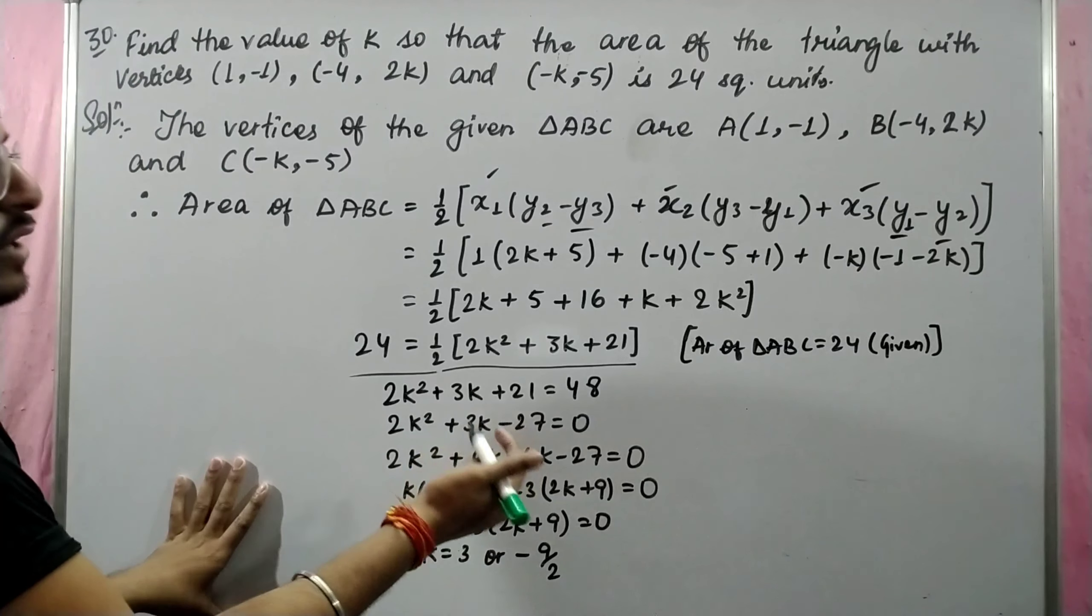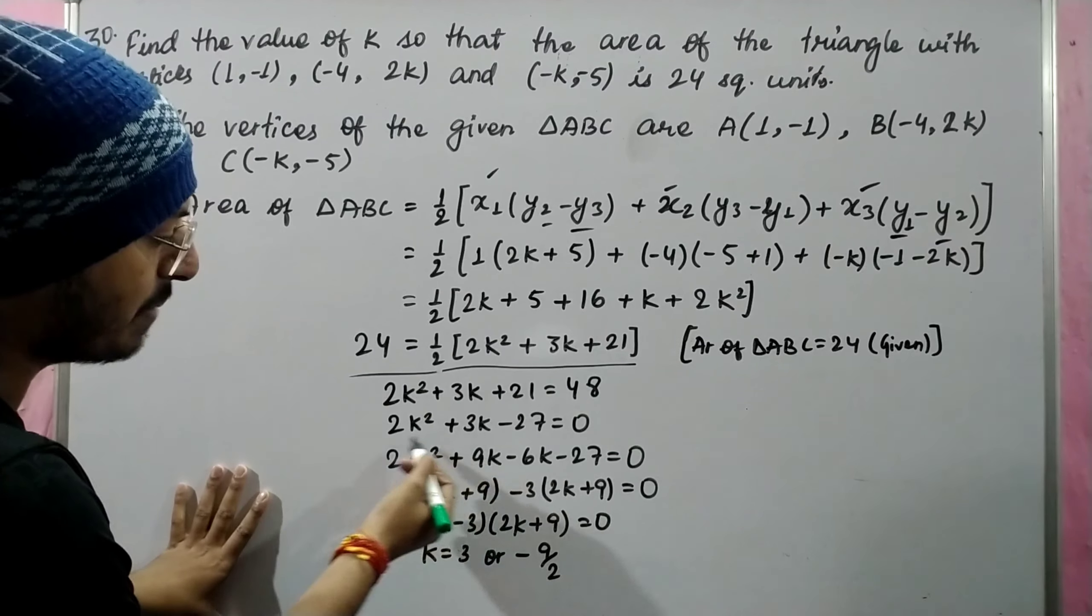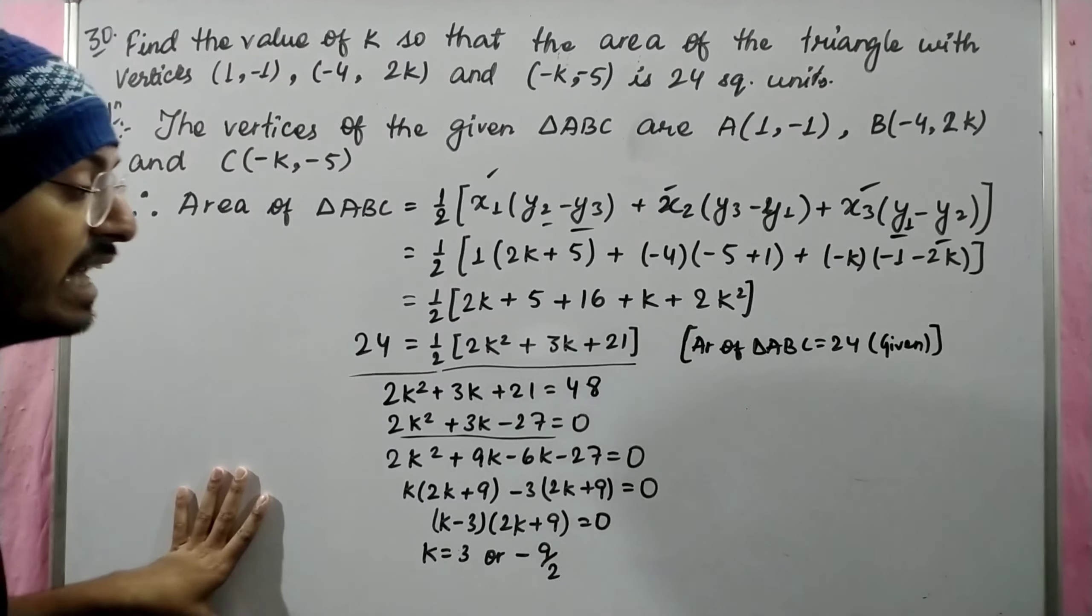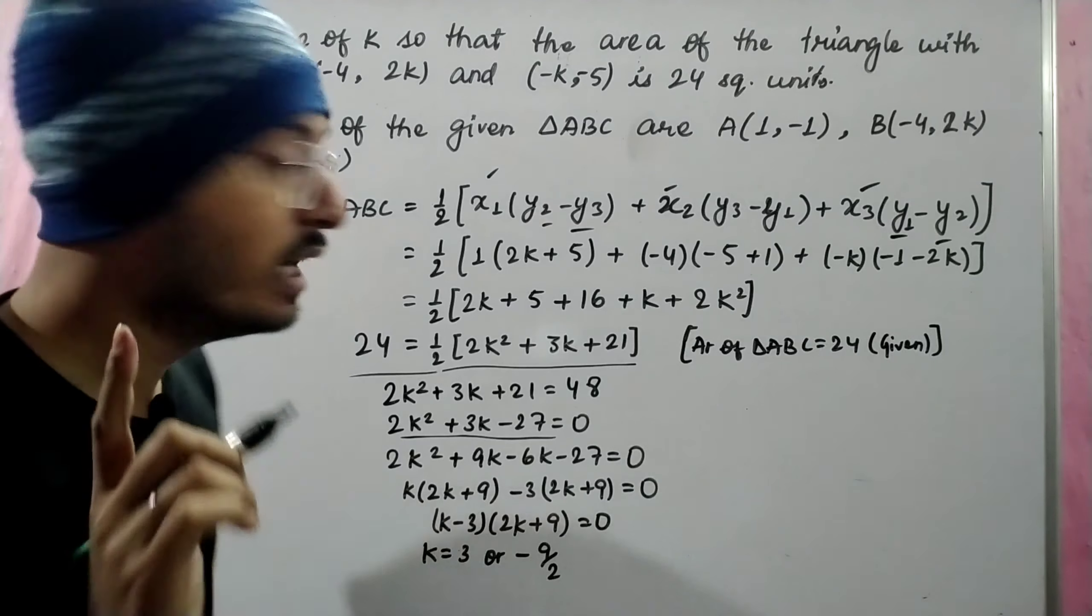The 48 is in minus. Look at the simple quadratic equation: 2k² + 3k + 21 = 48, which becomes 2k² + 3k - 27 = 0.